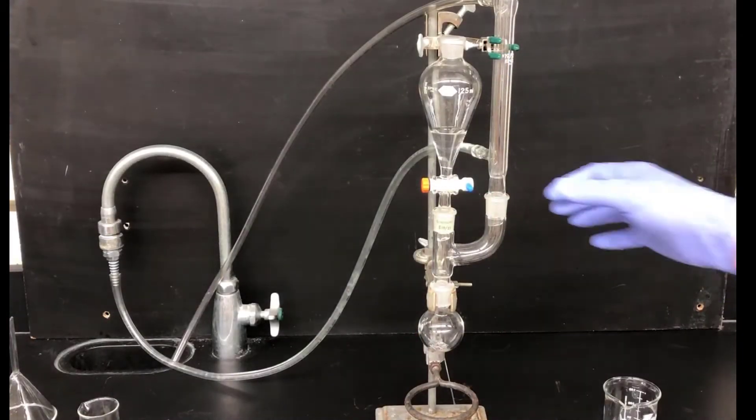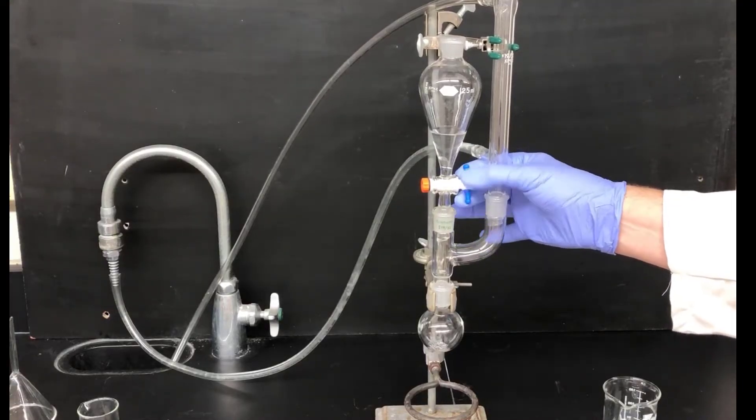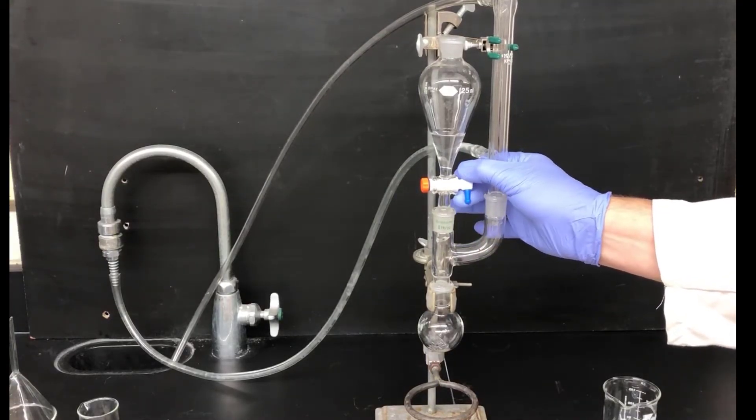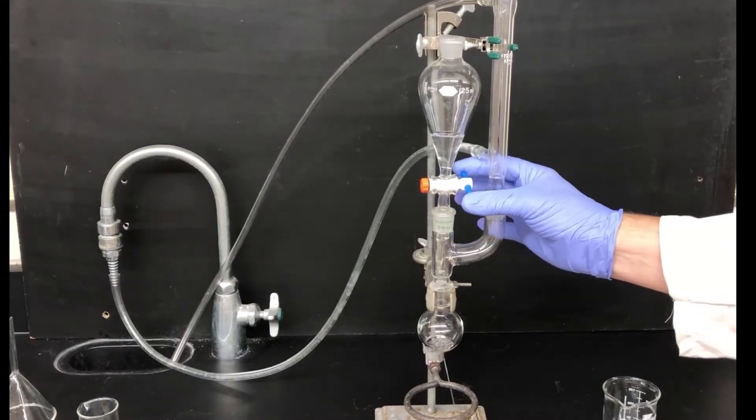Next, I'm adding a little bit of the solution of bromobenzene and ether, just enough to cover the magnesium turnings in the bottom of the flask. This is enough reagent to get the Grignard reagent formation reaction started. Once that reaction is going, I'll add the rest of the solution.